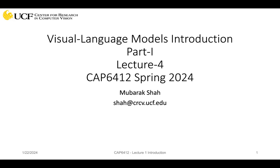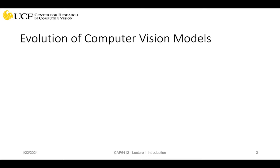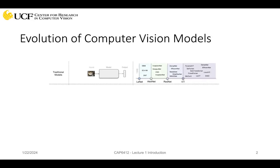I'm going to give a general introduction of visual language models, and this will be at least three parts. If you look at computer vision evolution, traditionally we used to do models where we put an image and get some output — for classification, object detection, and so on. These were the kind of neural networks: LeNet was a very old one, the first one, then AlexNet, ResNet, ViT, and all those things. That's the traditional model of computer vision.